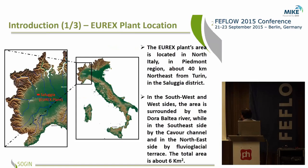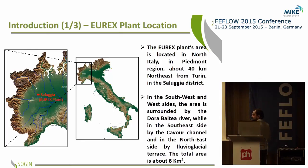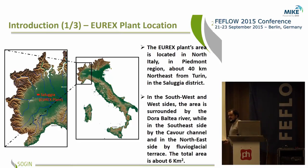The Aerox plant area is located in Italy in the Piemonte region near Turin. On the southwest and west sides, the area is surrounded by a river called Dorabatea, while on the southeast side by an irrigation channel, and on the northeast side by fluvial-glacial terrains. The total modeling area is about six square kilometers.